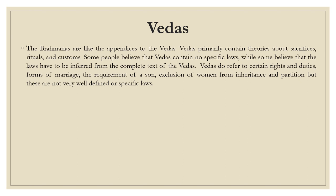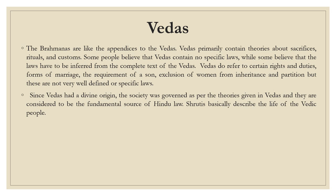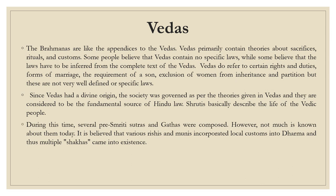Veda does refer to certain rights and duties, forms of marriage, the requirement of a son, exclusion of women from inheritance and partition, but these are not very well defined or specific law. It is believed that in Vedas, how to live life and what should be the different stages of life has been defined. Since Veda had a divine origin, the society was governed as per the theories given in Vedas, and they are considered to be the fundamental source of Hindu law. Shruti basically described the life of the Vedic people. During Vedic time, several pre-smriti sutra and gathas were composed. It is believed that various rishi and munis incorporated local custom into dharam, and thus multiple shakhas came into existence.